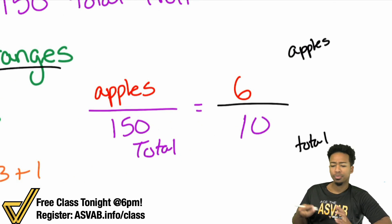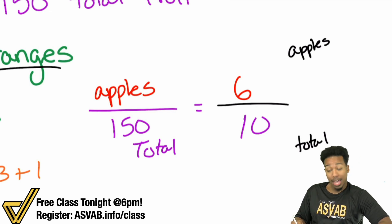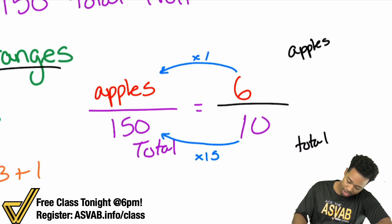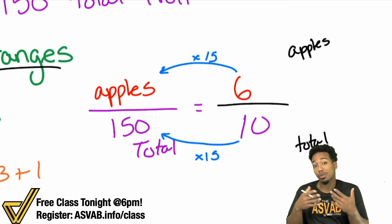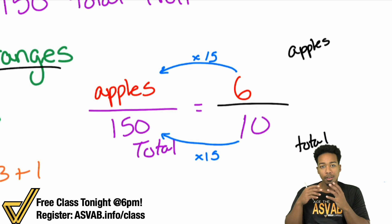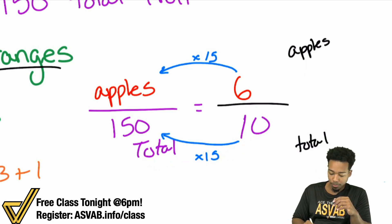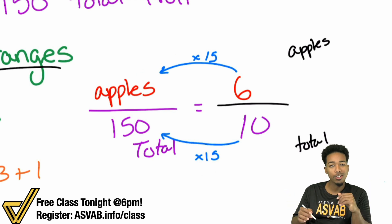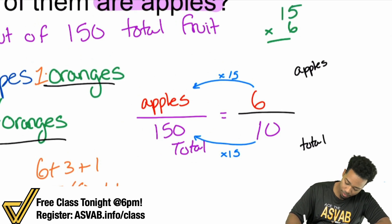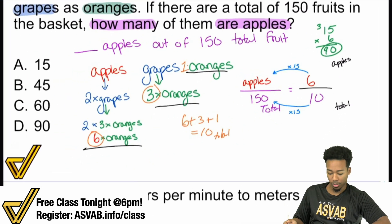How do we solve this proportion? There's a super quick way and a super long way. The super quick way: see if there's a convenient comparison you can make. From 10 to 150, that's times 15. So from six, times 15 gives us apples. This is how you compare the same things in the same way — an equivalent scale factor. Six times 15: five times six is 30, one times six is six, plus three is nine, giving us 90. So 90 apples out of the total.